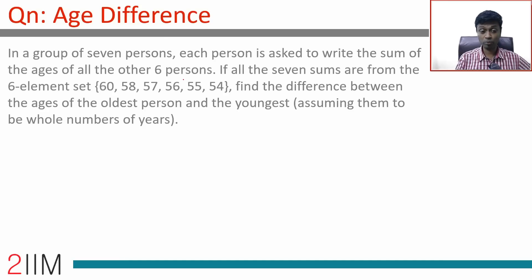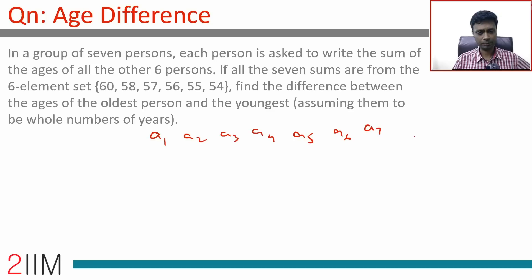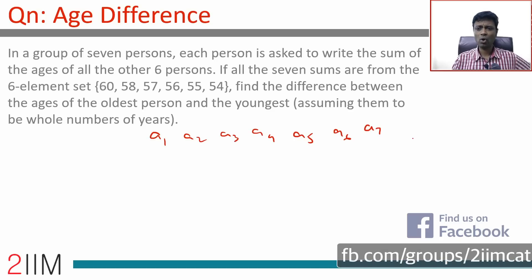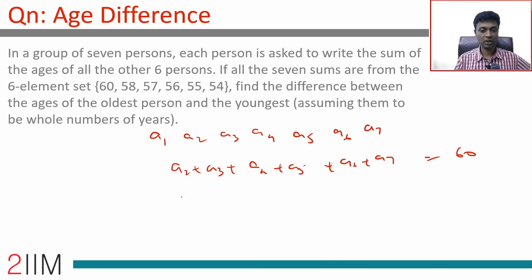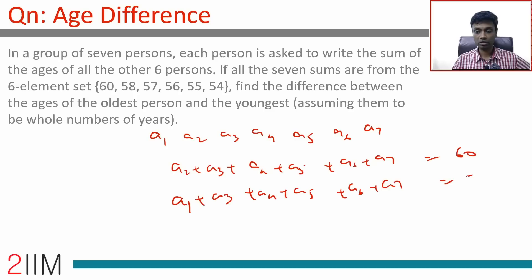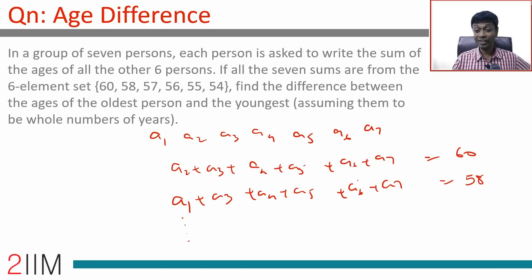Tricky question. Assume the ages are a1, a2, a3, a4, a5, a6, a7. Each person writes the sum of all other six persons' ages. So a1 writes a2 + a3 + a4 + a5 + a6 + a7, let's say equal to 60. a2 writes a1 + a3 + a4 + a5 + a6 + a7, equal to 58, and so on.